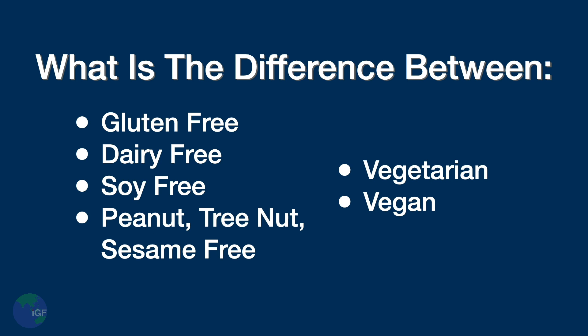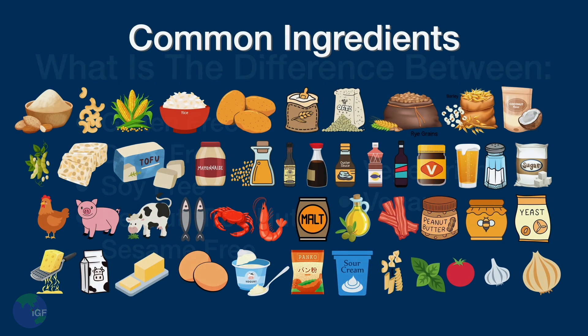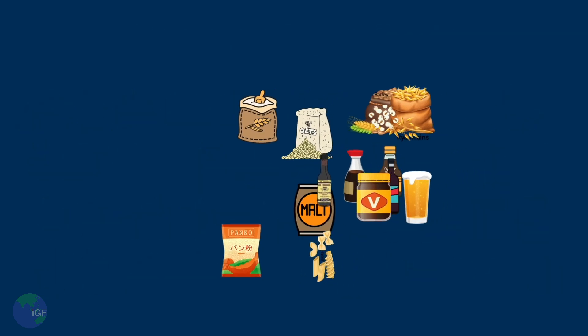To help illustrate our lesson, we have chosen 48 ingredients that are often part of the menu to show what each diet can and cannot have. Obviously we are not able to include every possible food, but this should be enough to help you visualize the different diets.